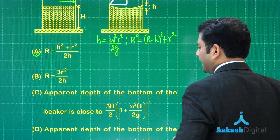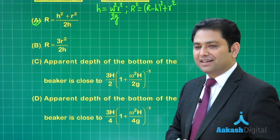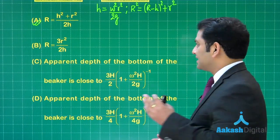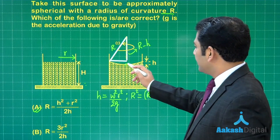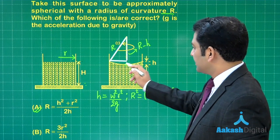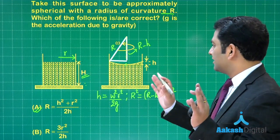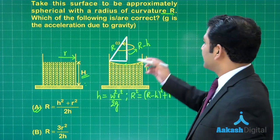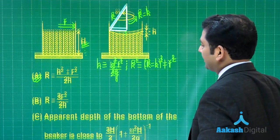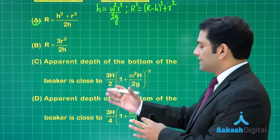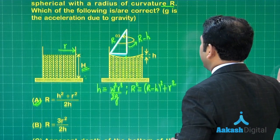Now the second part is: out of C and D, we need to choose the apparent depth of the bottom of the beaker is very close to. This is now the concept that optics will be utilized. The apparent depth, with respect to this surface, we will consider this as the pole. This particular height can be taken as capital H with all amount of approximation, because capital H is very much greater than small h. The option says very close to, so that is a perfect valid argument.